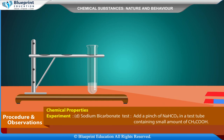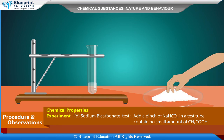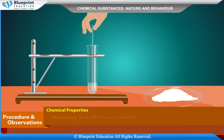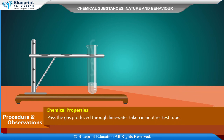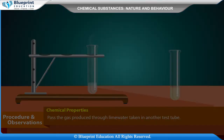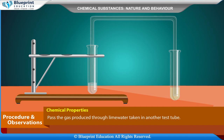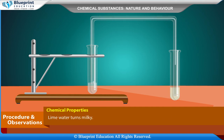Experiment: Sodium bicarbonate test. Add a pinch of NaHCO3 to a test tube containing a small amount of CH3COOH. Observation: Brisk effervescence observed. Inference: CO2 is evolved. Pass the gas through lime water in another test tube — lime water turns milky. CO2 gas turns lime water milky.